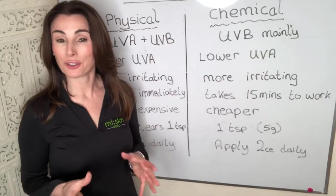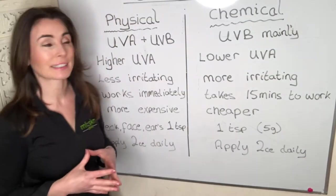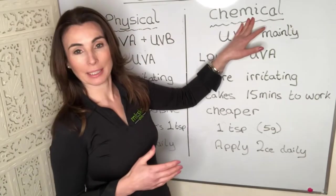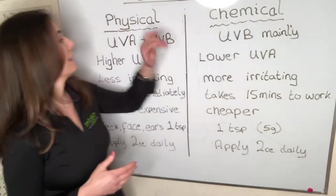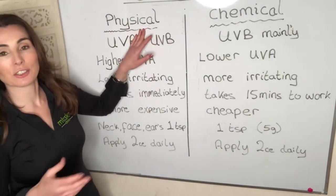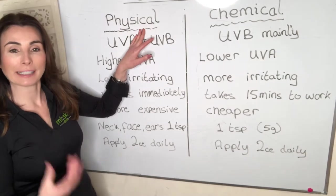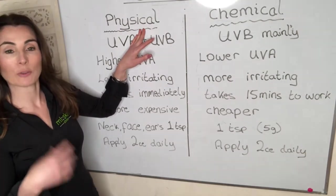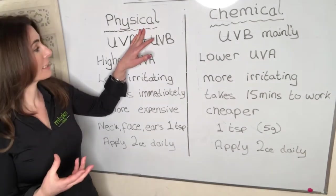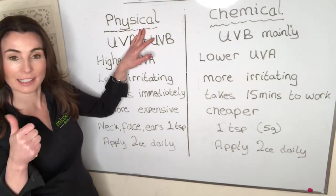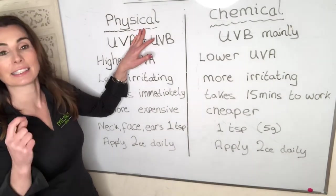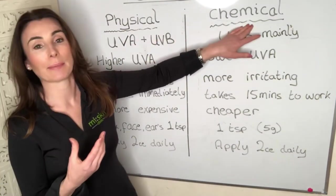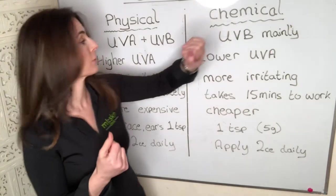There are two different types of sunscreen on the market: physical sunscreens and chemical sunscreens. Physical sunscreens act like a mirror — they reflect light off the skin. There are only two ingredients that classify a sunscreen as physical: titanium dioxide and zinc oxide. All other ingredients are classified as chemical-based sunscreens.